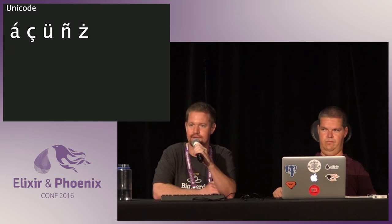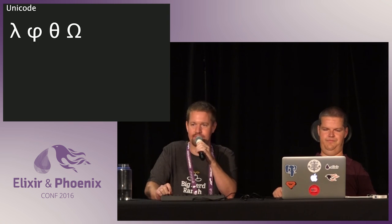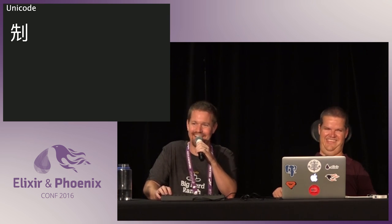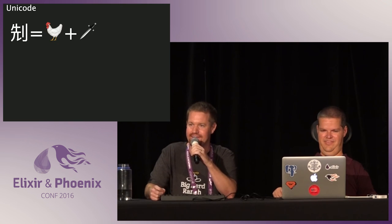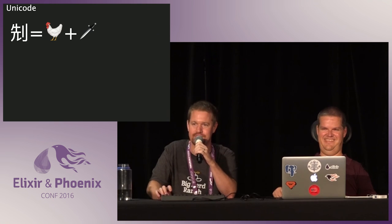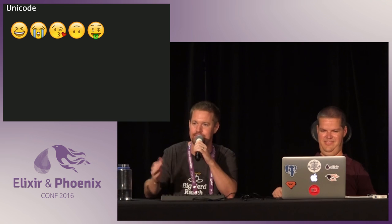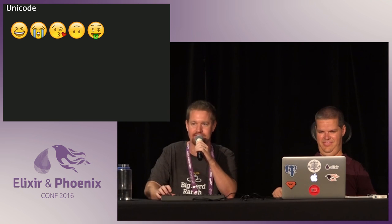Unicode wants to let us type a lot more than the characters that Americans were typing in the 70s. We want to be able to type accented letters, Greek letters, and Han characters. We also want to be able to type pictures — emoji for laughing, crying, being upside down, having dollars in our mouth. Unicode lets us do all these things.